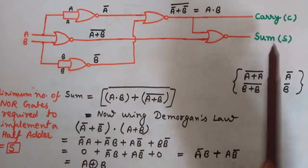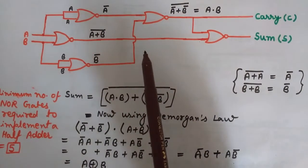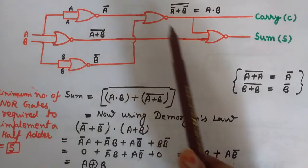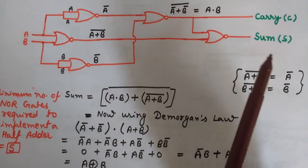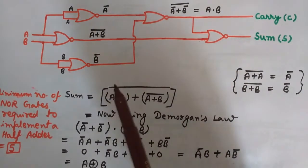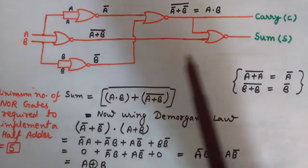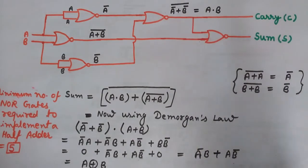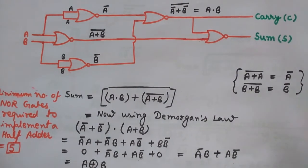Hope you got it. Keep in mind this very important fact: we need a minimum of five NOR gates to completely implement a half adder. In the next video we will see full adders — we will design full adders using NAND gates, NOR gates, logical expressions, and many other things. We will also see MUX, DEMUX, encoders, decoders, and more topics in digital electronics.